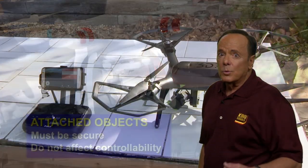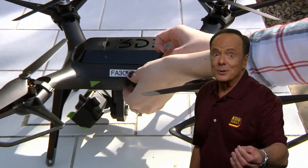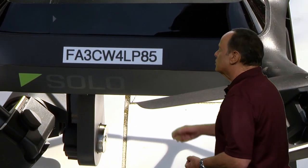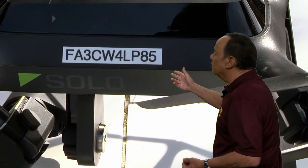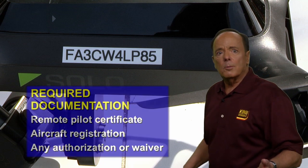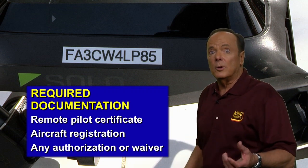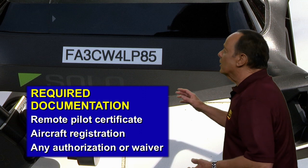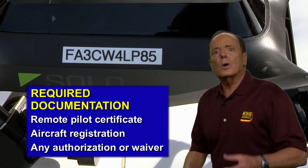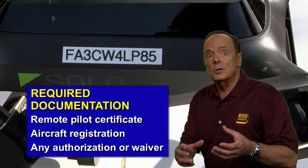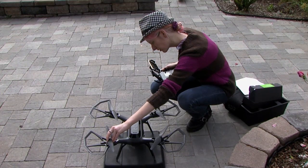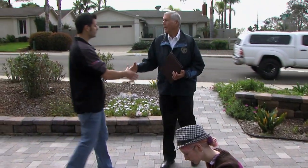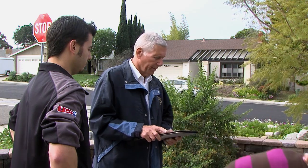There may be times when the FAA will want to inspect your operations, so you'll want to ensure that the registration number is readily accessible or visible. You'll also want to ensure that all other required documentation is either physically or electronically available — things such as your remote pilot certificate, the aircraft registration, any necessary authorization, waiver or exemption, or any other documentation required by regulation related to the operation. Also, if requested, you must make the drone available for inspection or testing, plus you must make yourself, your other crew members, or anyone else involved in the operation available to the FAA.